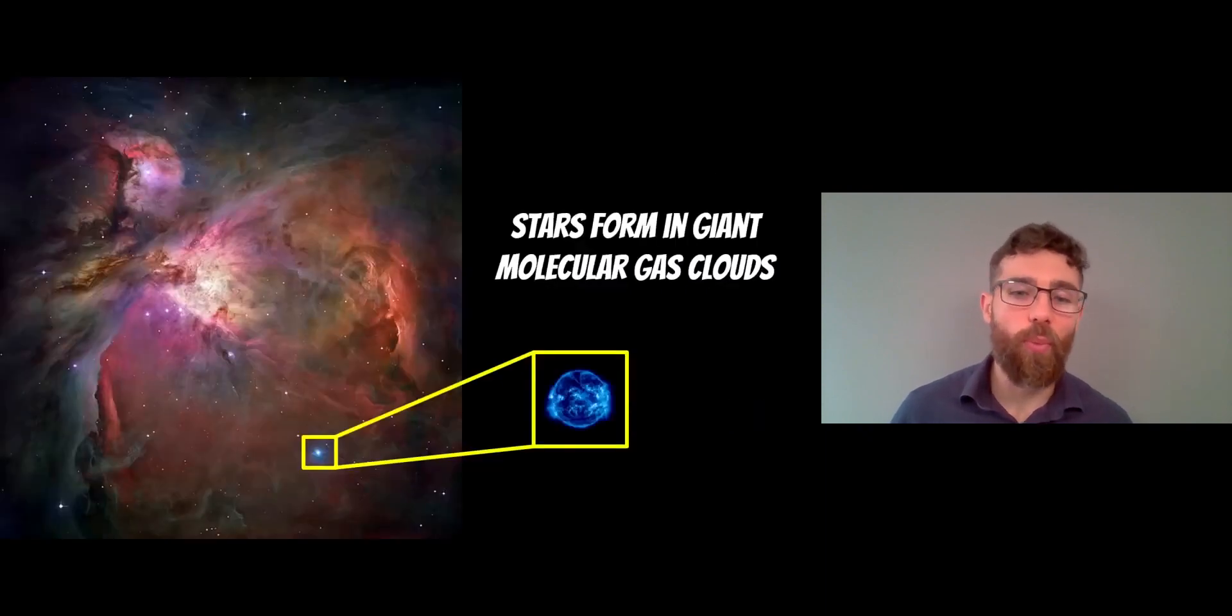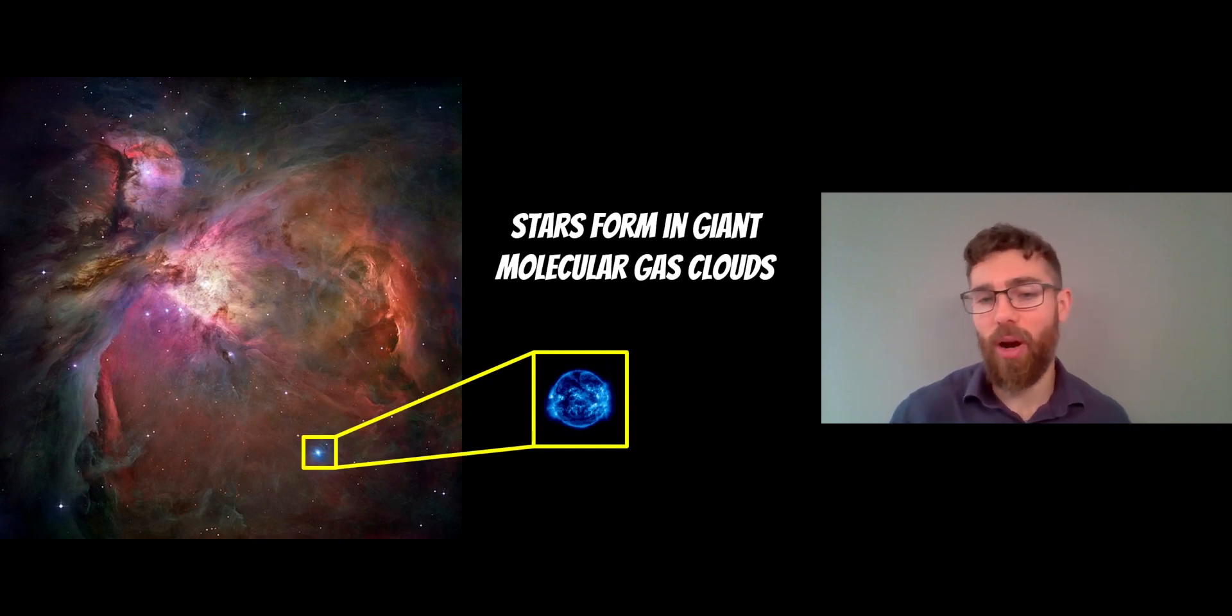The stars form in these giant molecular gas clouds, which typically collapse in the spiral arms. So here we go. You've got a nice blue star in the Orion Nebula, which would have formed in this gas cloud. And this is fairly typical for spiral galaxies.